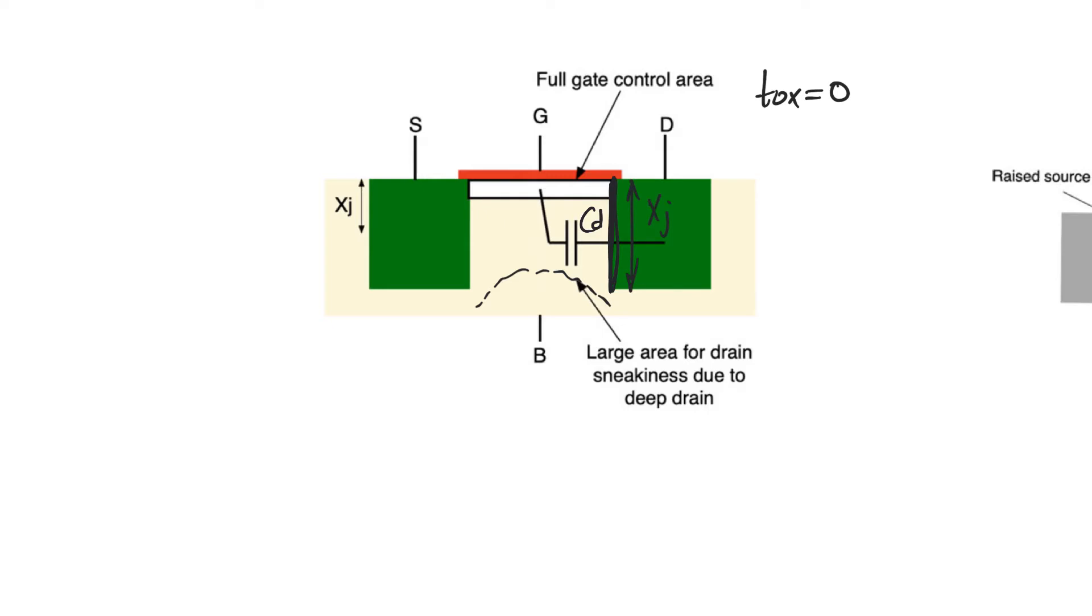So the first reaction one would have to this is why not make the drain shallow? Why not create a shallow drain like this? Now this would actually control drain induced barrier lowering but the problem is it would increase drain resistance which is a devastating secondary effect. Probably as bad as drain induced barrier lowering if not more so.